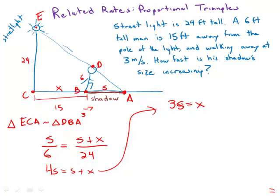That's incredibly easy now. That's the formula we get from proportional triangles. Now it's very easy to take a derivative. 3 dS/dt equals dX/dt.